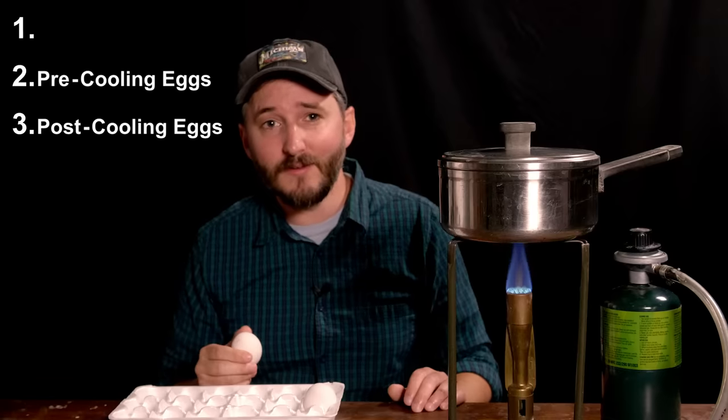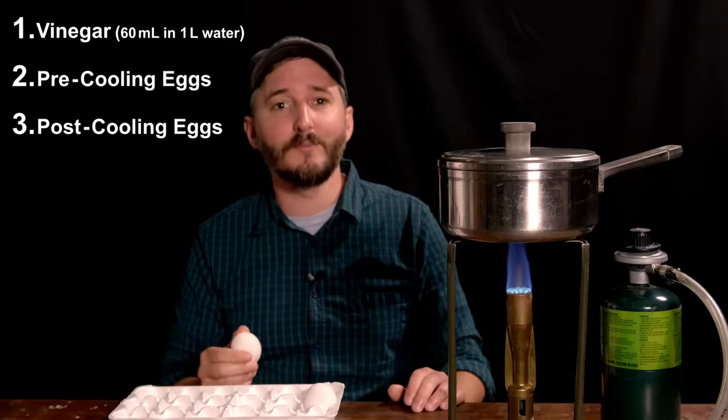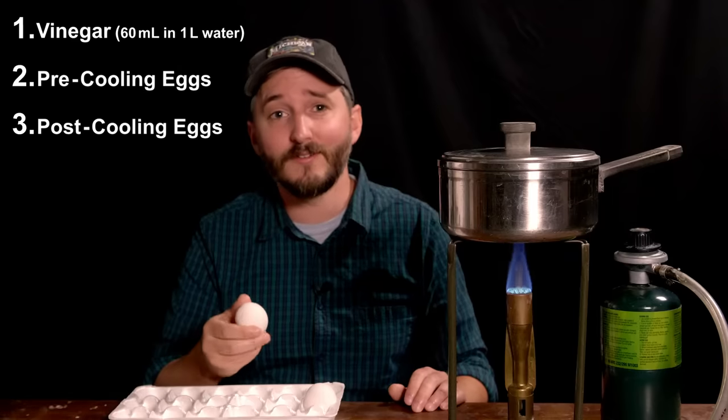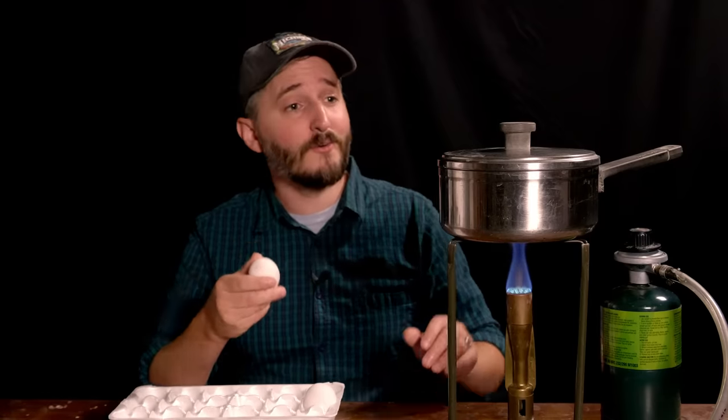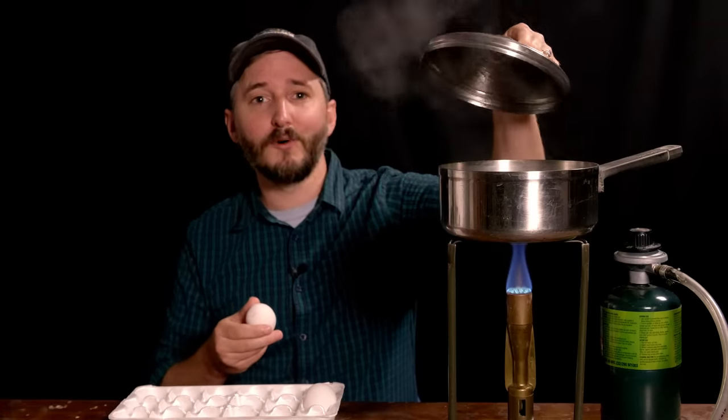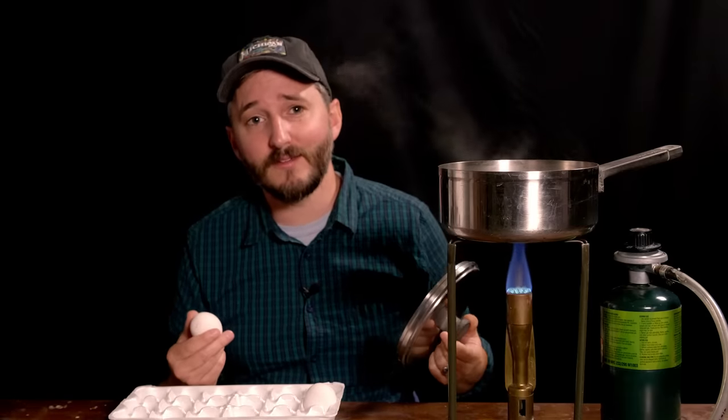The last variable is an additive, vinegar, which supposedly helps loosen the shell if a small amount is added to the water. So we have three different variables and a variety of ways that we could test them.